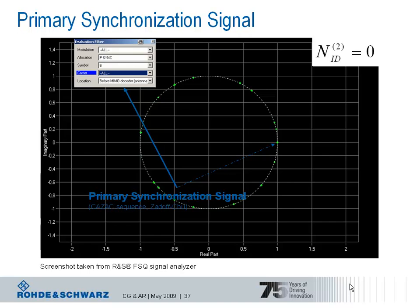When we look at the constellation diagram of the primary synchronization signal, recorded here with the Rohde & Schwarz signal analyzer FSQ, the constant amplitude is indicated by the unique circle, and the good autocorrelation can be observed by looking at each individual subcarrier carrying the primary synchronization signal. In the frequency domain, the PSS occupies 62 out of 72 reserved subcarriers around the unused DC subcarrier, which corresponds to the carrier frequency in the downlink. The remaining 10 subcarriers — 5 on each side — are unused guard subcarriers, which helps with matched filtering to find the right sequence.